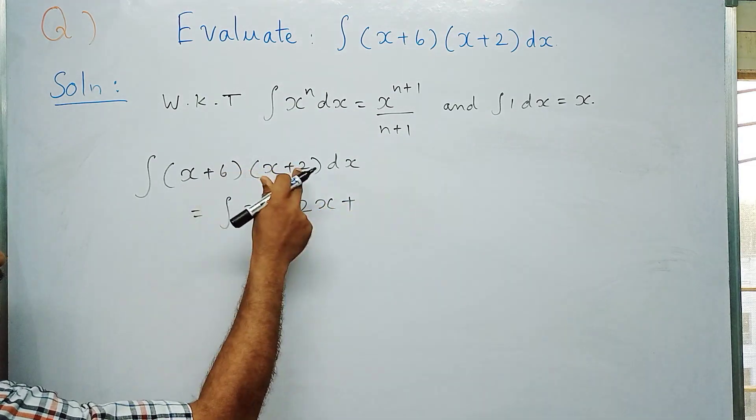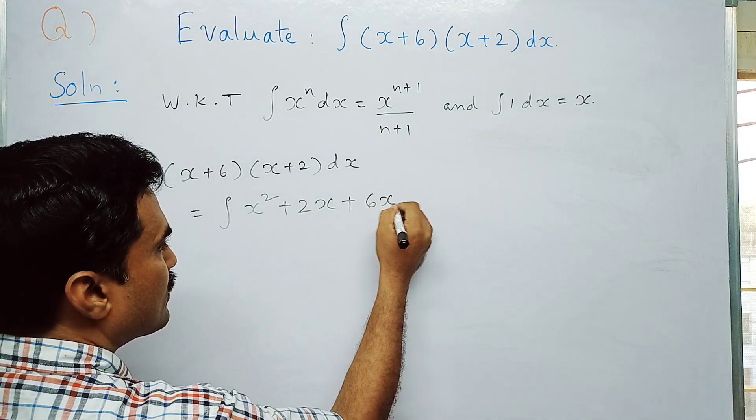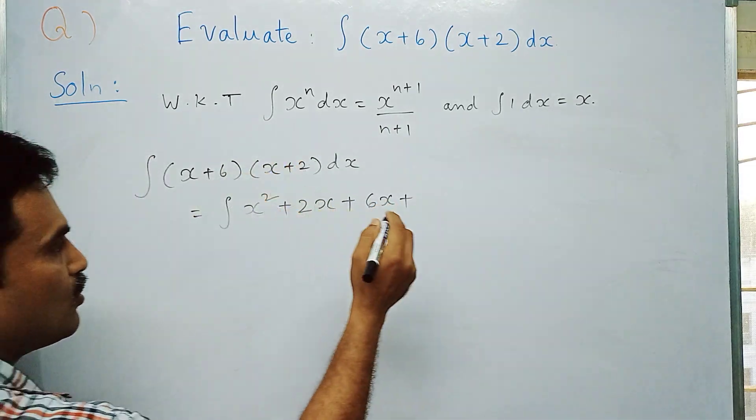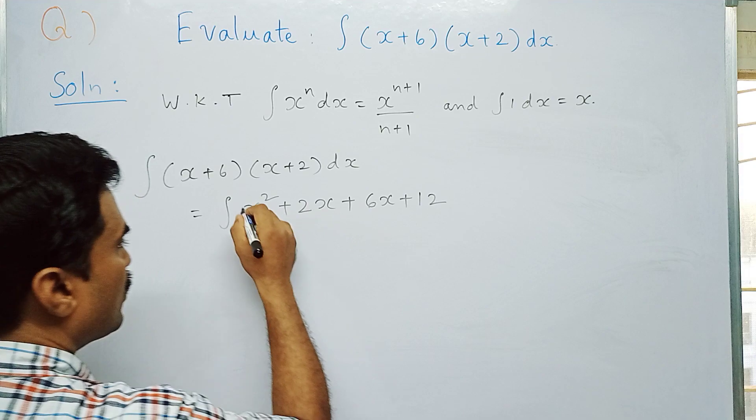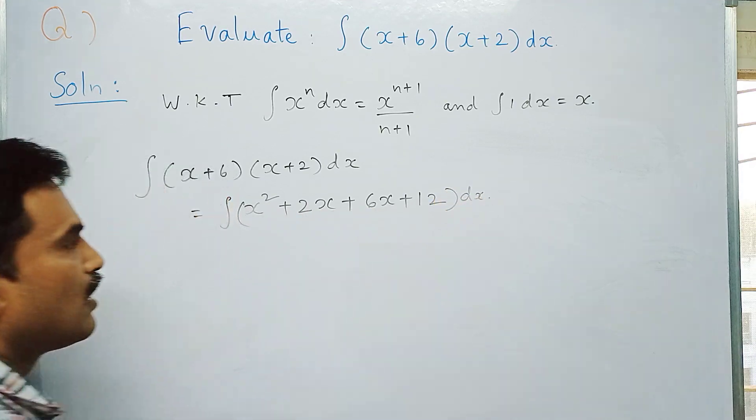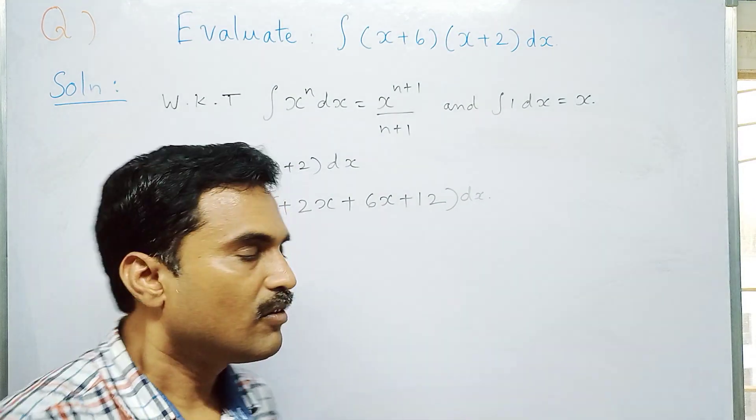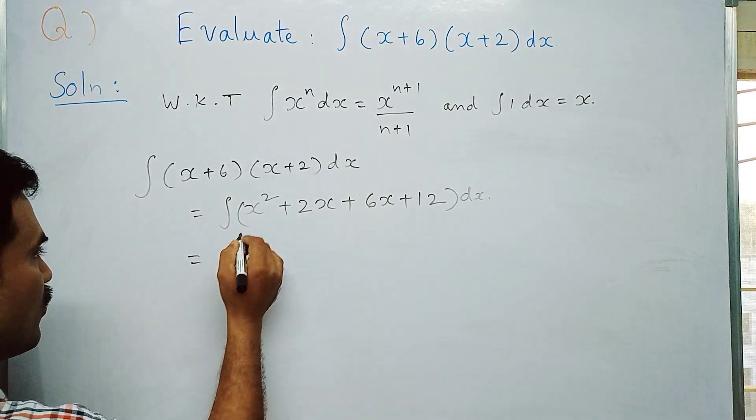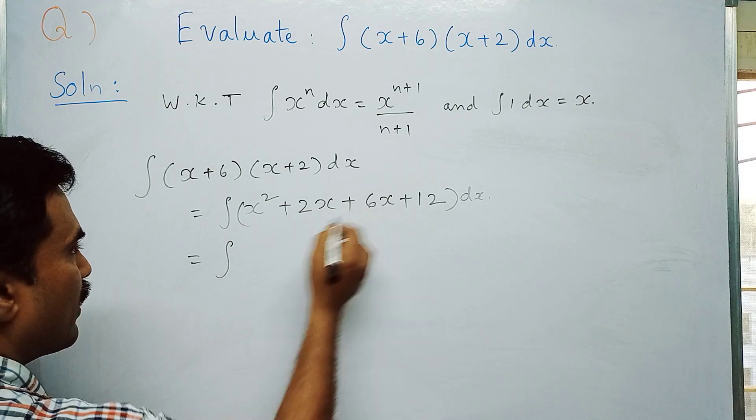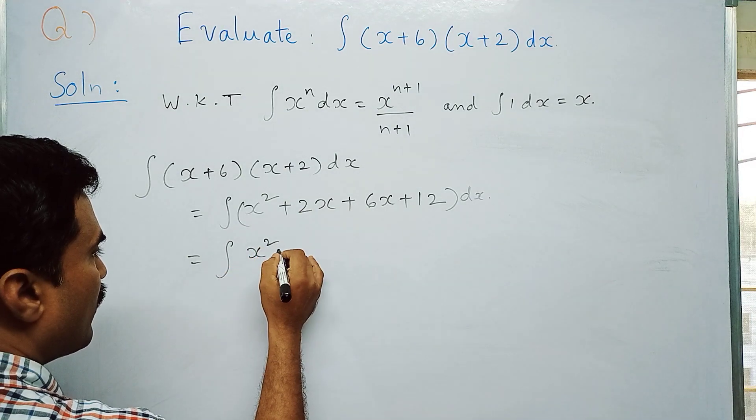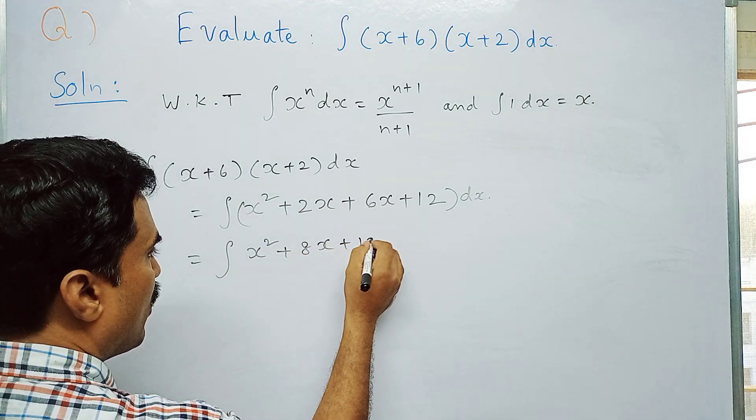In this you have 2x plus 6x, which is 8x. So we write the same thing: integral x² + 8x + 12 dx.